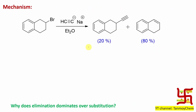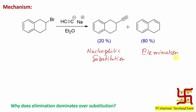Now, what is the major product of this reaction? I'll discuss the mechanism and give you the actual information. If you look at this reaction, 20% is produced via nucleophilic substitution, and 80% is produced via elimination. In the 20% case, the acetylide is acting as a nucleophile, and in the 80% case, it is acting as a base.